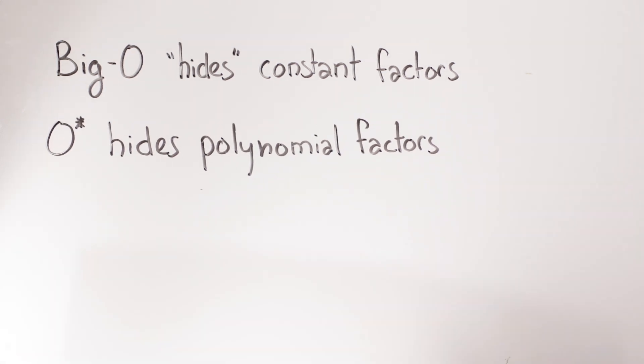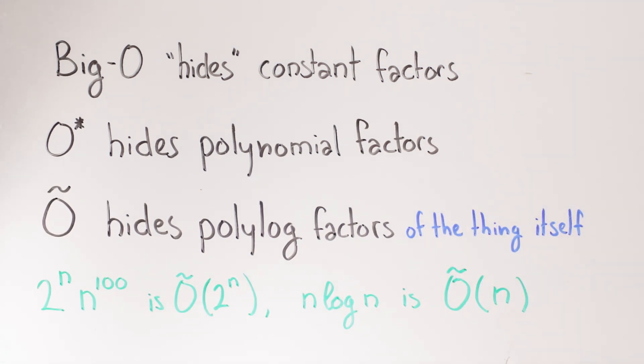Our function g(n) is O tilde f(n) if it is big O of f(n) times polylog f(n).